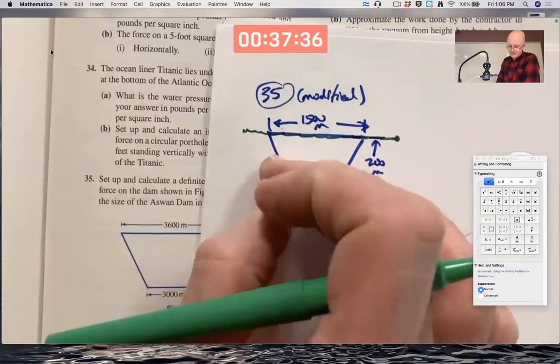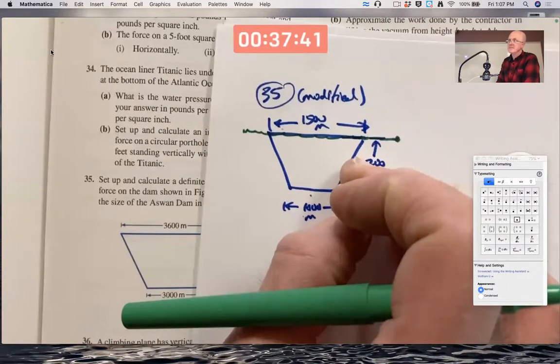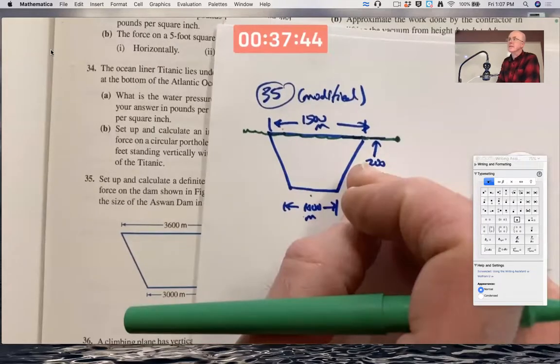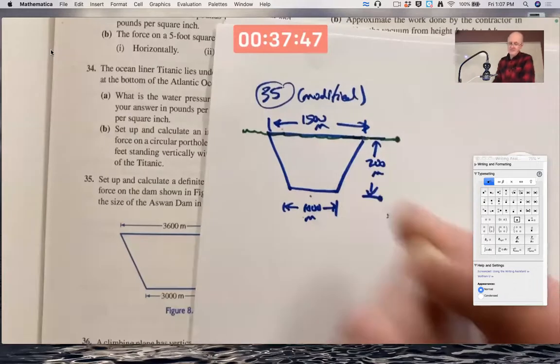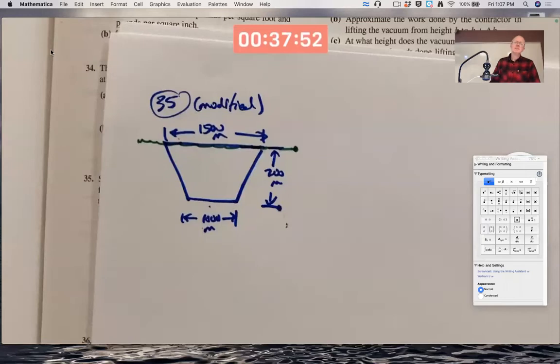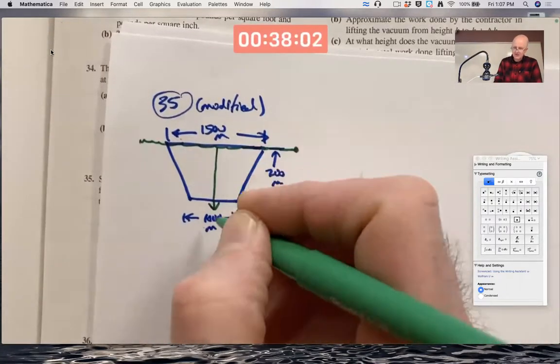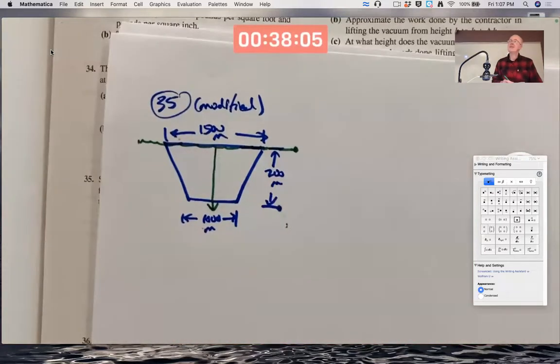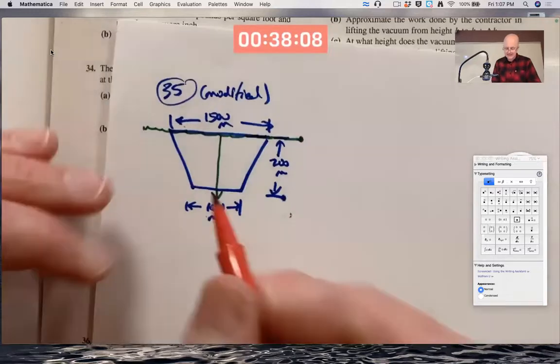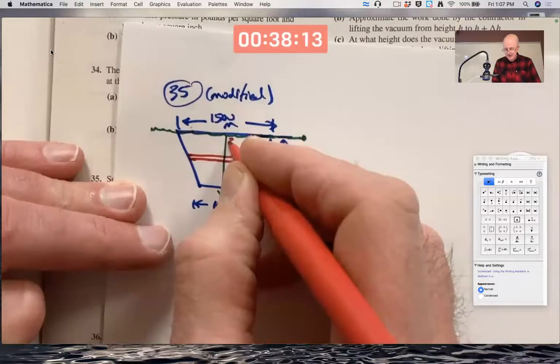So the cross-sectional distance here, cross-sectional areas, well I should call it a distance, is not going to be constant. It's best when thinking about this kind of problem to think about the vertical axis going downward. And I could call it y, but the book calls it h.